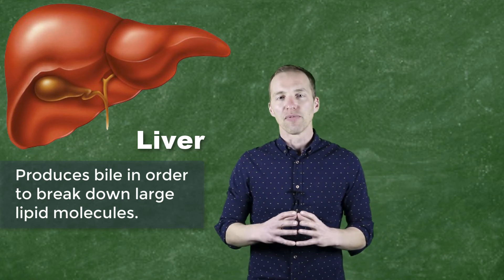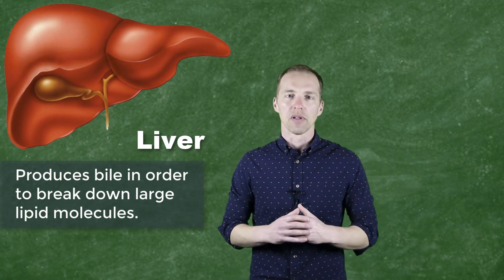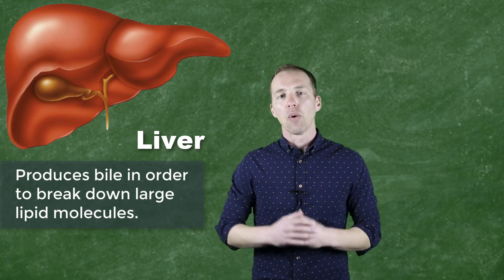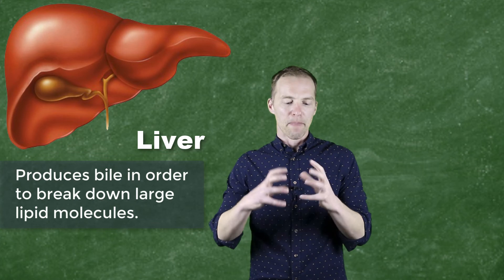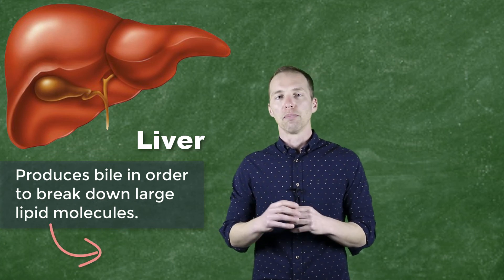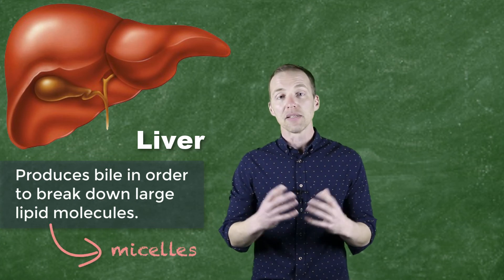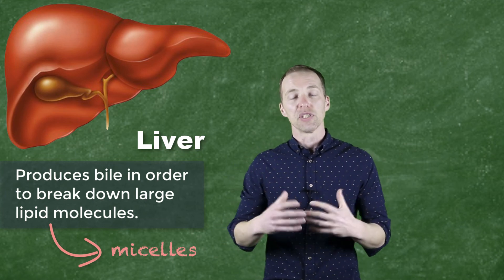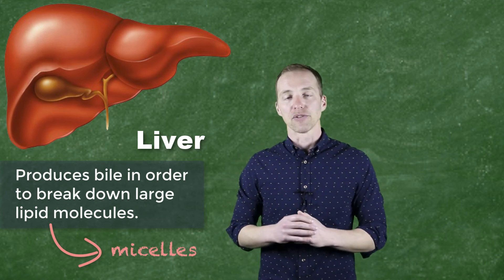Now I've already talked about fats as they come into this region of the small intestine. They're just far too big and globular to break down effectively or efficiently. So bile acts to break these big fat globules down to smaller components called micelles. And these micelles can then be acted upon by the lipases to more efficiently and effectively break down the fats or the lipids.